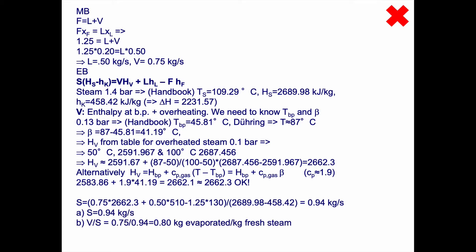Now the steam economy is simple because we've already calculated V. So V divided by S becomes 0.75 divided by 0.94, that is 0.8 kg of vapor evaporated per kilogram of fresh steam used.